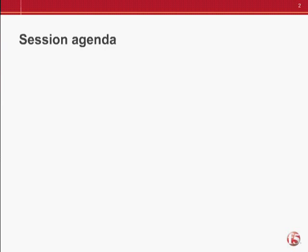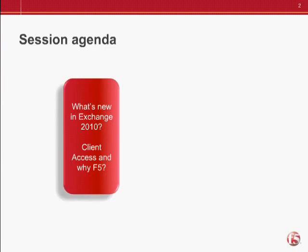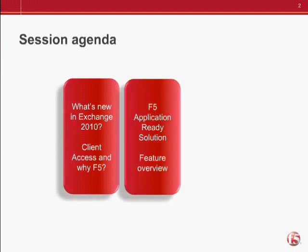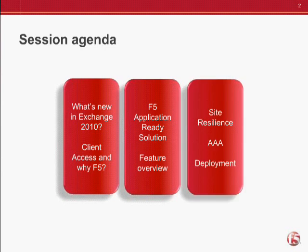All right, everyone. Let's take a look at our agenda today. We've got three main portions of content. We're going to spend the first section on what's new in Exchange 2010 and why to think about client access and F5 Networks together. Secondly, we'll go through an overview of key features in Microsoft's application-ready solution for Exchange, then move on to site resiliency and global traffic management, as well as access, authentication, authorization, and deployment helps within our platform. So let's jump into that first portion — what's new around Exchange 2010.